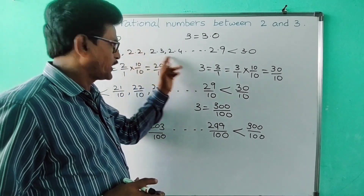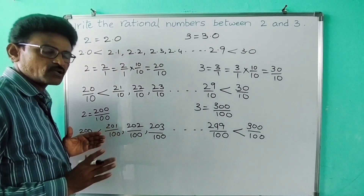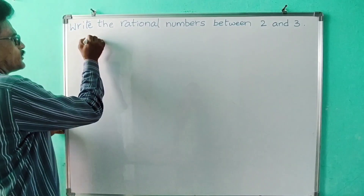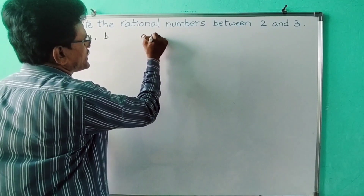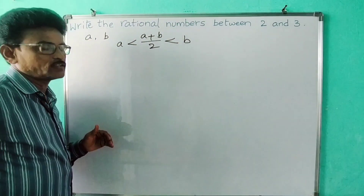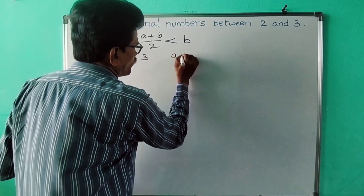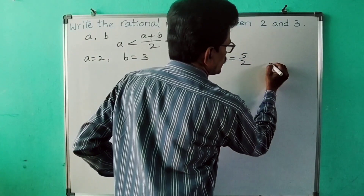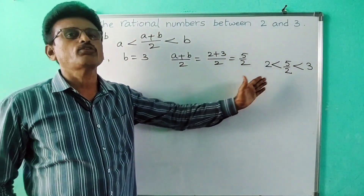That is one type of method. Now we will look at a different method — the mean method — for finding rational numbers between two rational numbers. If a is one rational number and b is another, then the rational number between a and b is a plus b by two. Taking a as two and b as three, a plus b by two is two plus three by two, which equals five by two. So the order is: two, then five by two, then three. Five by two lies exactly between two and three — it is two and a half.